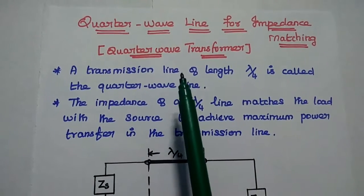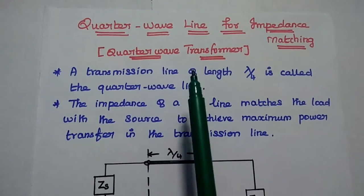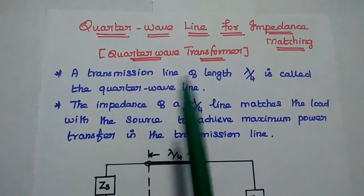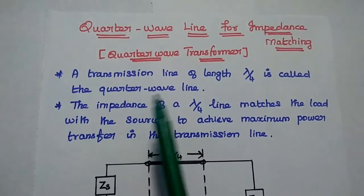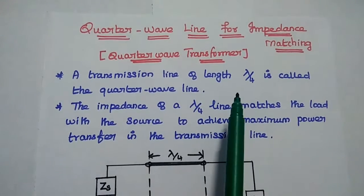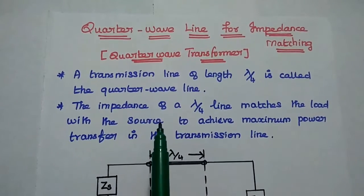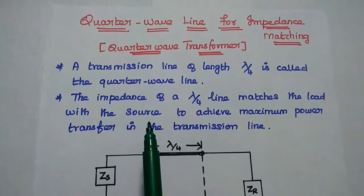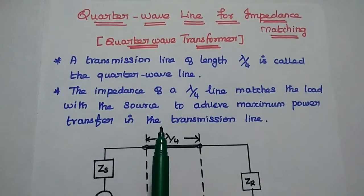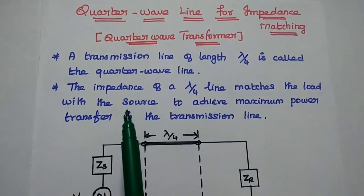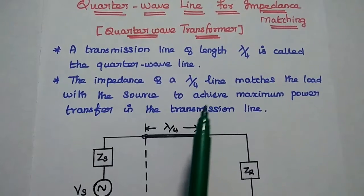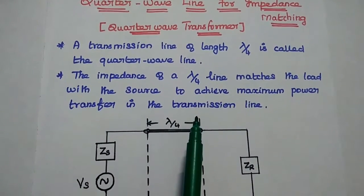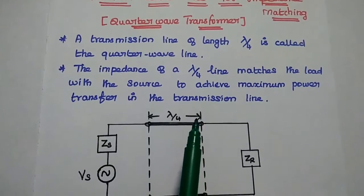Now we are going to discuss quarter wave line for impedance matching. It is also called as quarter wave transformer. A transmission line of length lambda by 4 is called as quarter wave line. This line can be used for impedance matching in the transmission line. Here the impedance of a lambda by 4 line matches the load with the source impedance to achieve maximum power transfer.